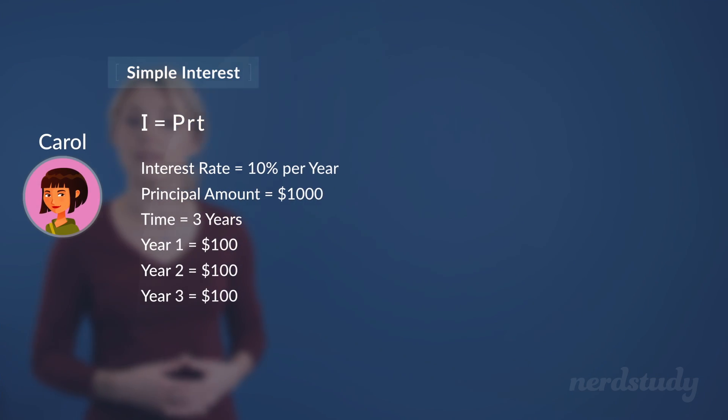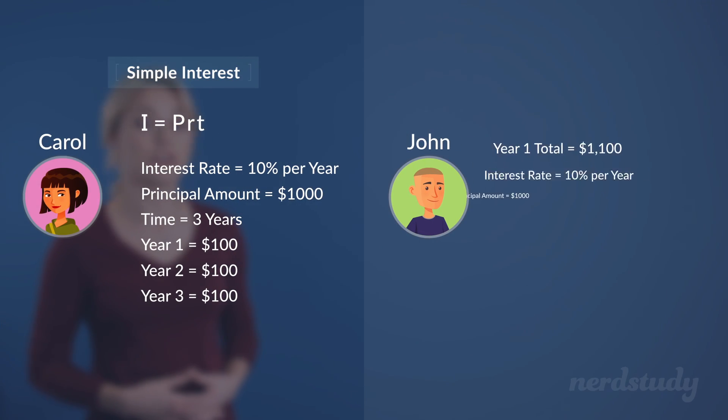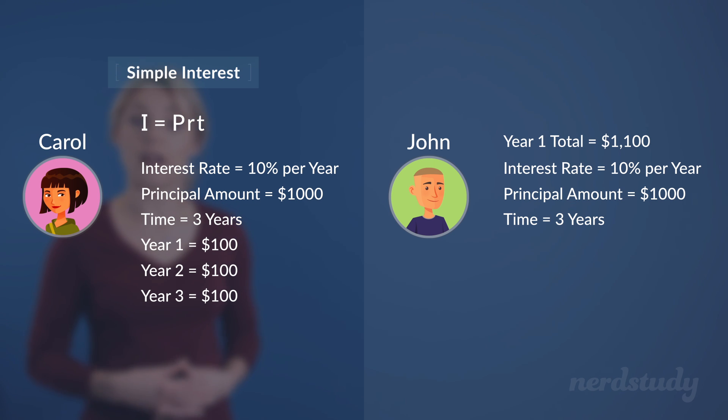Now, let's say that John invested into a similar kind of deal, only that instead of it being a simple interest, he invests into a compounded interest. What this means is that after every year of making interest, the next year will make interest off of not just the principal amount, but from the total amount including the interest that has been earned from each year.